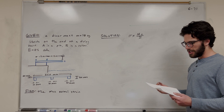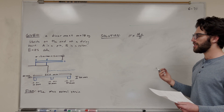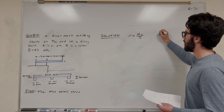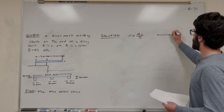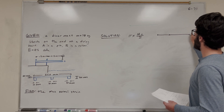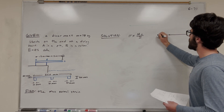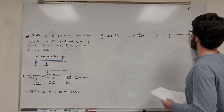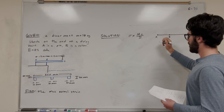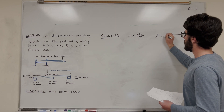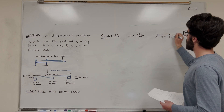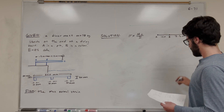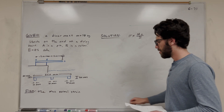What's the first step? Let's find our support reactions by drawing a force body diagram. So we're going to have this kind of force body diagram. This is A, B, and C. This is 1.5 meters, and this is 2.5 meters. Let's draw our forces.